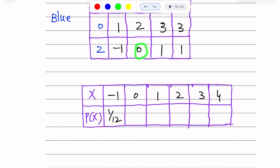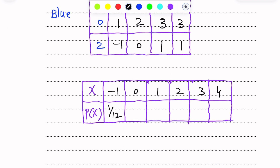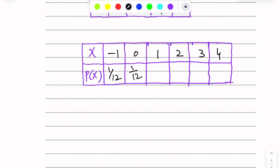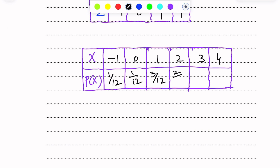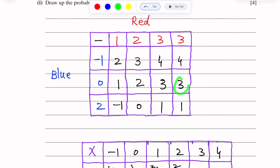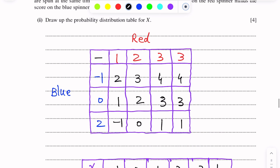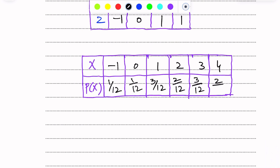The probability of 0 is 1 over 12. The probability of 1: it appears 3 times, so 3 over 12. The probability of 2 is 2 over 12. The probability of 3 is 3 over 12. The probability of 4 is 2 over 12.